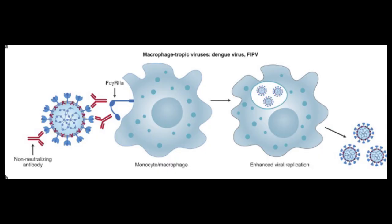So when has this happened in the past? Antibody dependent enhancement has happened naturally during many different viral infections. For example, during dengue virus, there are antibodies that don't bind correctly to the outside of the virus, and they end up getting taken up via the macrophage through the FC gamma receptor, making copies of themselves and making the infection worse. Dengue virus is an example of how ADE can happen during natural infection.